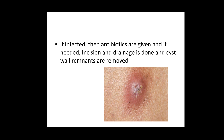If the cyst is infected, give antibiotics, anti-inflammatory drugs, and analgesics to control the symptoms. If abscess formation has already occurred, plan an incision and drainage of the swelling. The entire pus is drained and whatever cyst wall remnants can be removed should be removed. There is a high chance of recurrence following incision and drainage. An infected sebaceous cyst with pus pointing is an abscess, so incision and drainage is the treatment of choice — not excision.